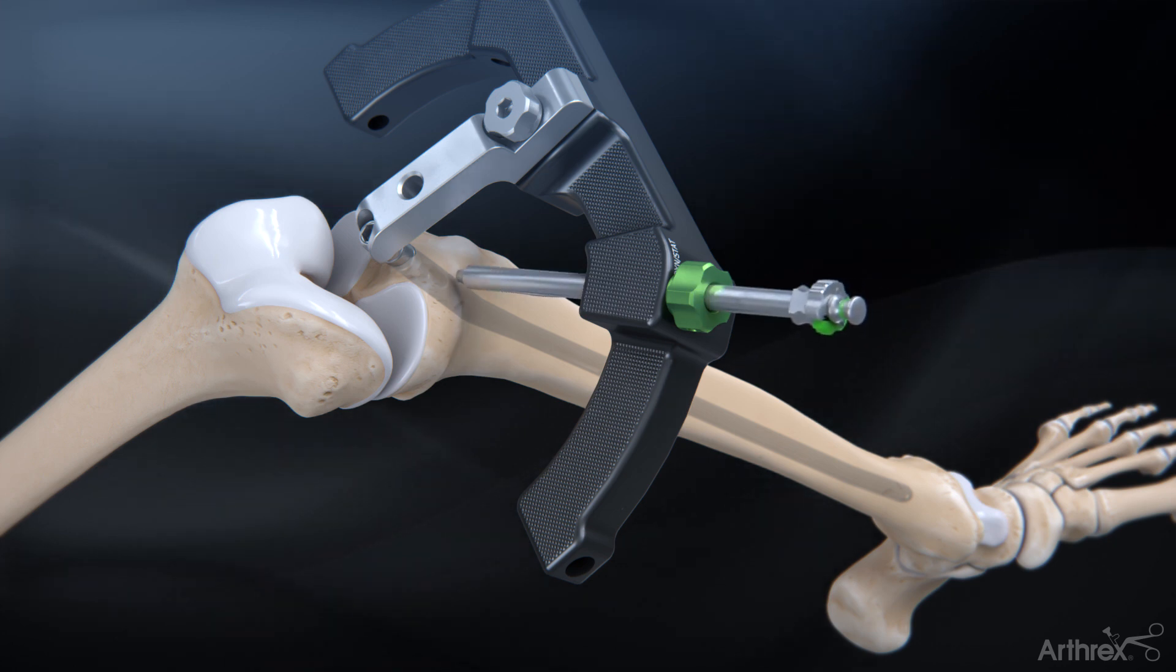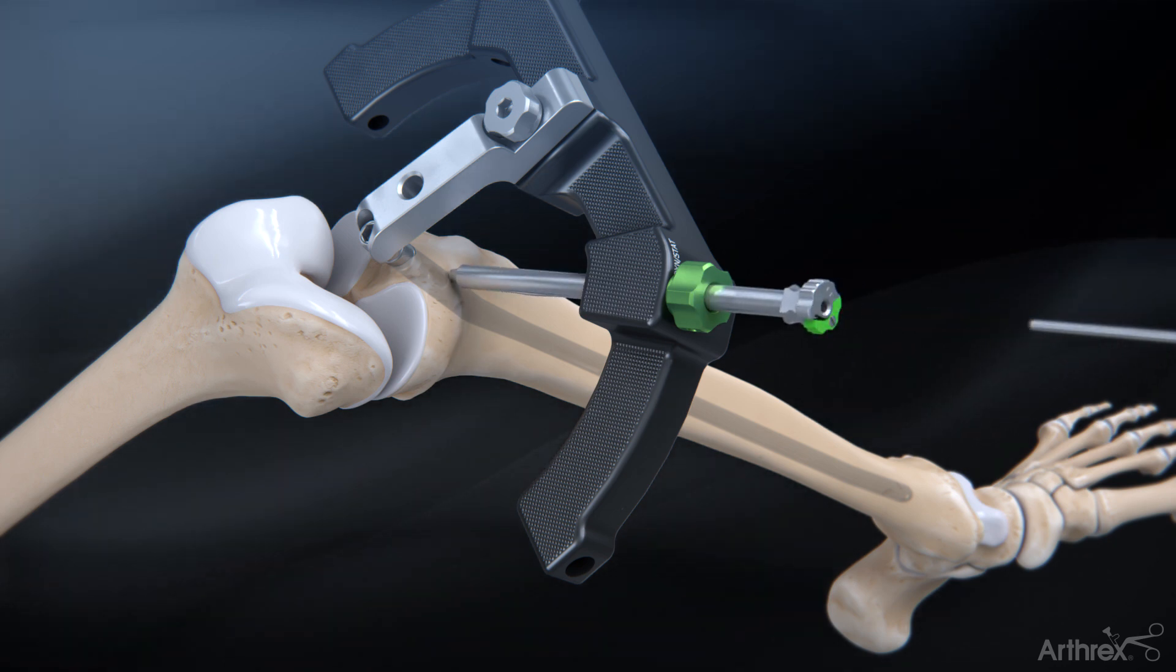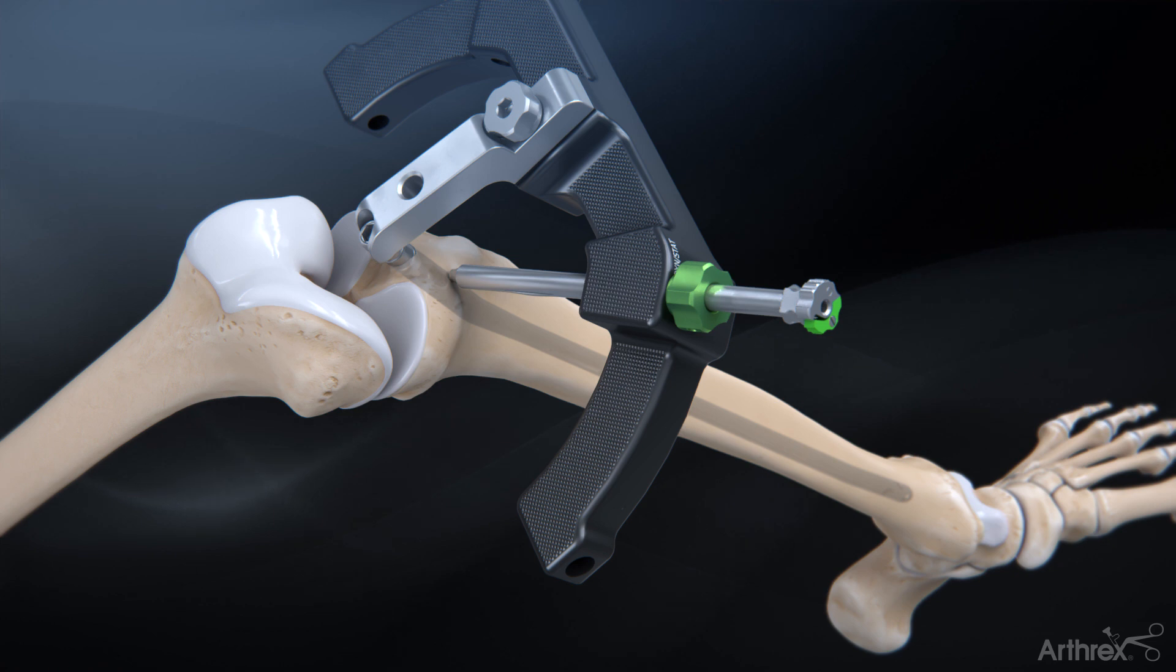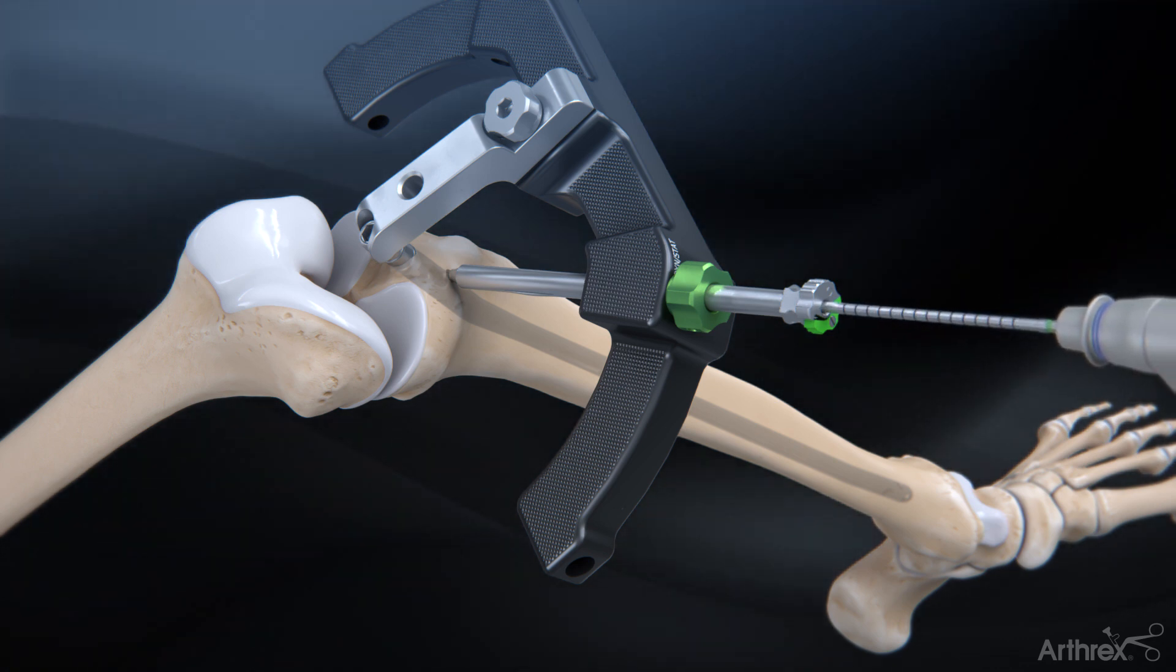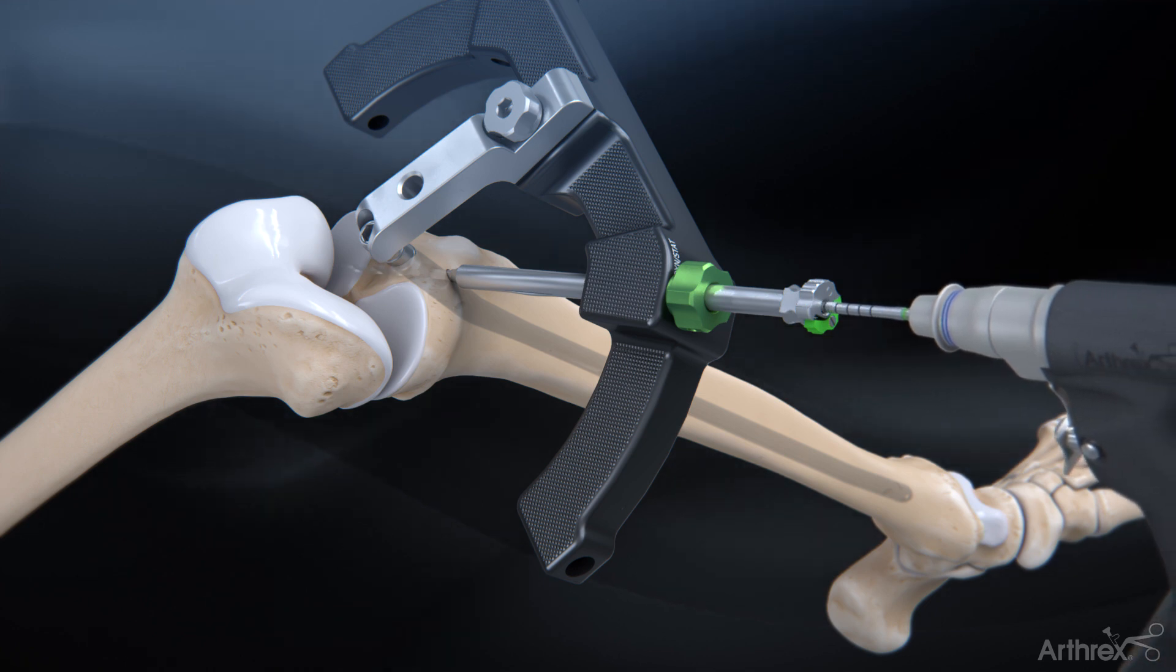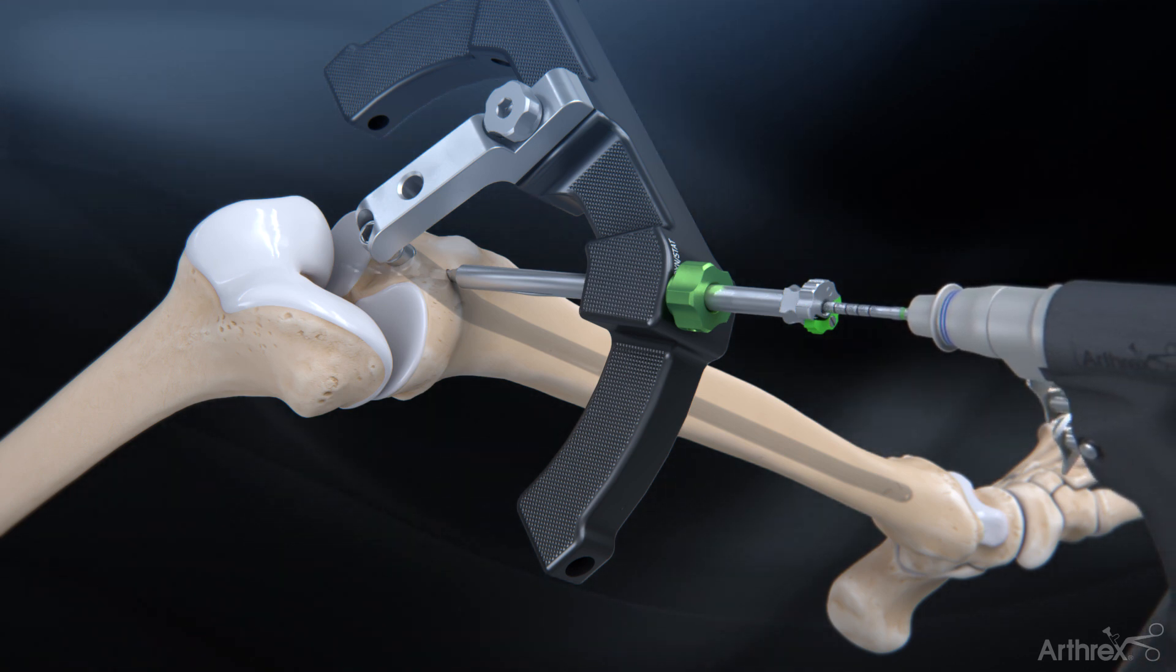Insert the assembled drill sheath, drill guide and obturator into the targeting guide until it rests on the outer cortex of the tibia. Using the calibrated 4.0 mm drill, drill through the drill guide and sheath to the desired depth and measure using the calibrations on the drill bed.